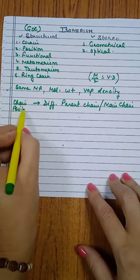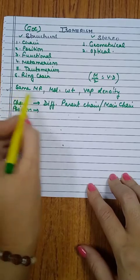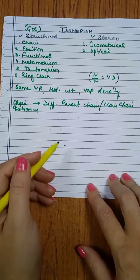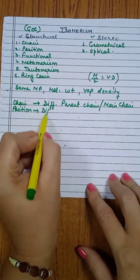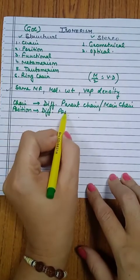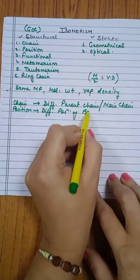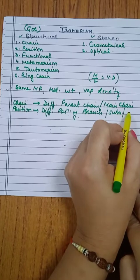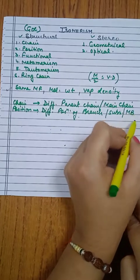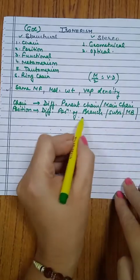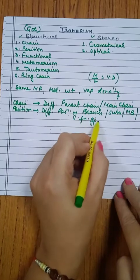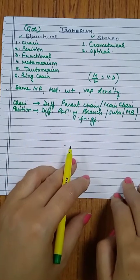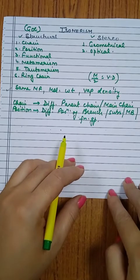When we talk about position isomers, they again share the same molecular formula and related properties, but they differ in position. They have different positions of branches, different positions of substituents, different positions of multiple bonds, or different positions of functional groups. Any compound where a position is different is called a position isomer.